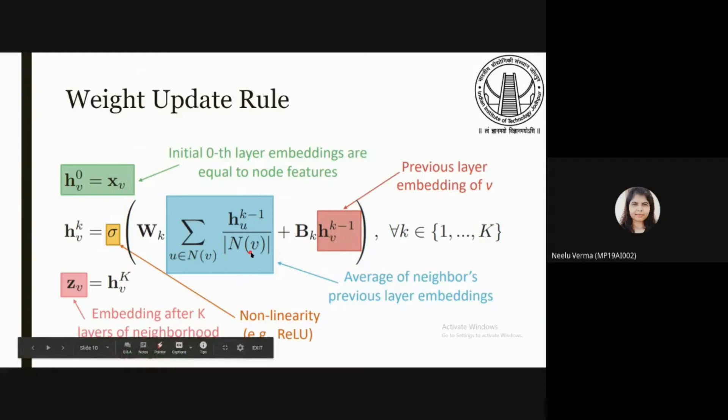Then WK connects the activation units with different weights and these weights are trainable. The term BK here is bias which is trainable and multiplied with the node under consideration V. BK is the self-loop activation for the node under consideration. The result will pass to the non-linear unit and the final result will be HV of K.